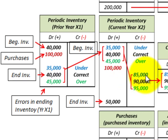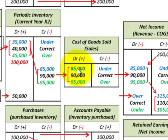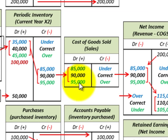That inventory charge is debited and recognized as cost of goods sold. For undervalued inventory, cost of goods sold is $85,000. For the correct amount, it's $90,000. And for overvalued inventory, cost of goods sold is $95,000.